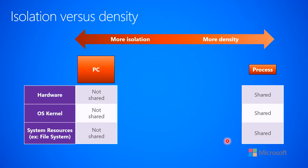If you look at this slide, what we've always had in the past is that you could have a PC, and you could put different services on different PCs. With different PCs, the hardware between them is not shared. Each service, if you put it on its own PC, has its own hardware. And because they're on their own PC, they're not sharing the operating system kernel — they each have their own operating system kernel. So whatever happens on one kernel has no effect on the other.